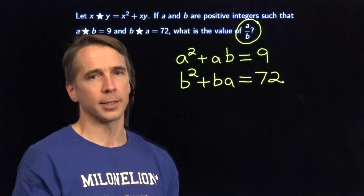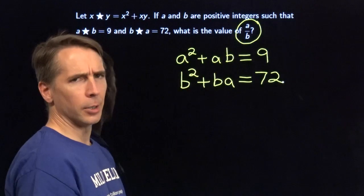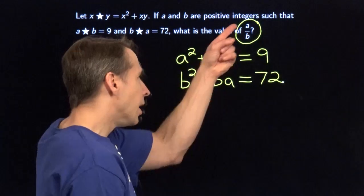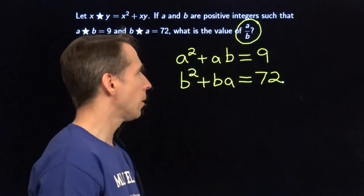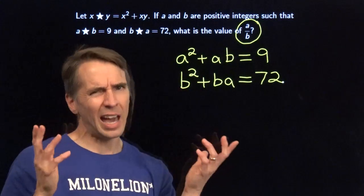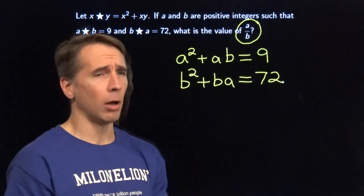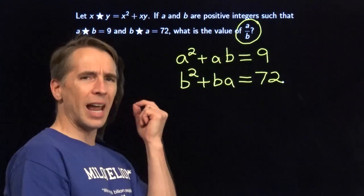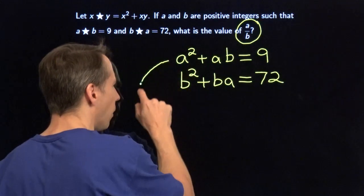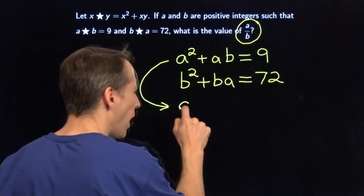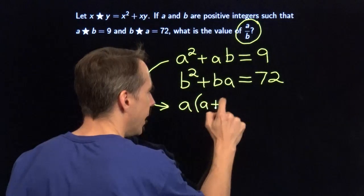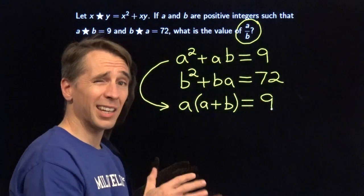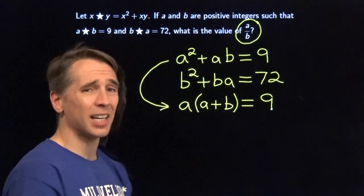So we got rid of the stars and we have a couple of pretty messy equations to deal with. We keep our eye on the ball again — we see an a all alone on top, b all alone on the bottom. So we go looking for how to get an a all alone or a b all alone. Looking at that first equation, if I factor out an a, I get an a that's kind of all alone — not quite all alone because it's still multiplied by the a plus b left over. But I see I can do something similar on the second equation as well.